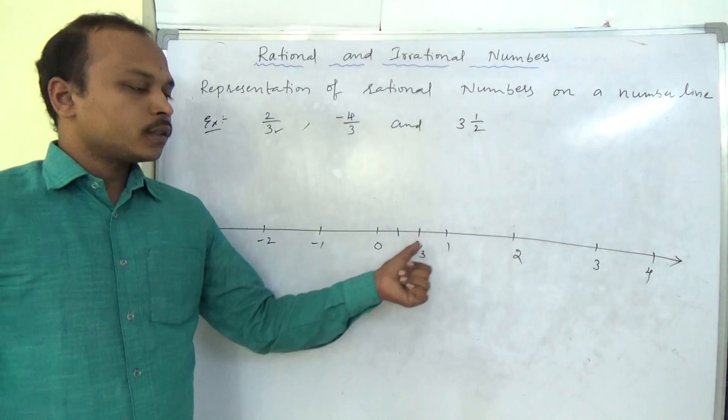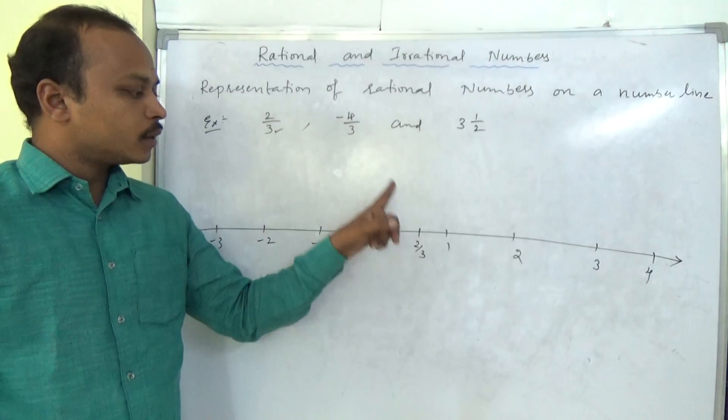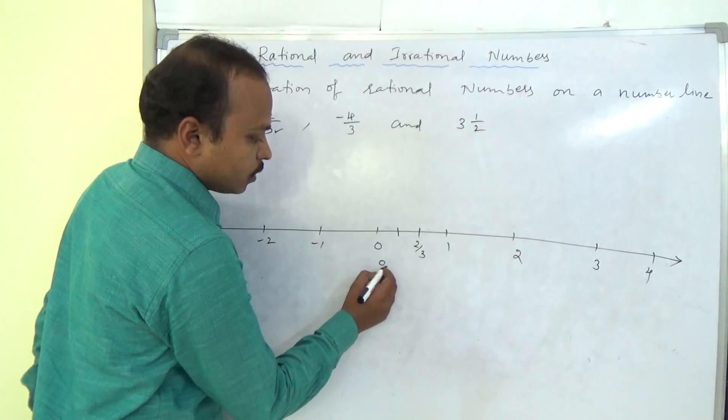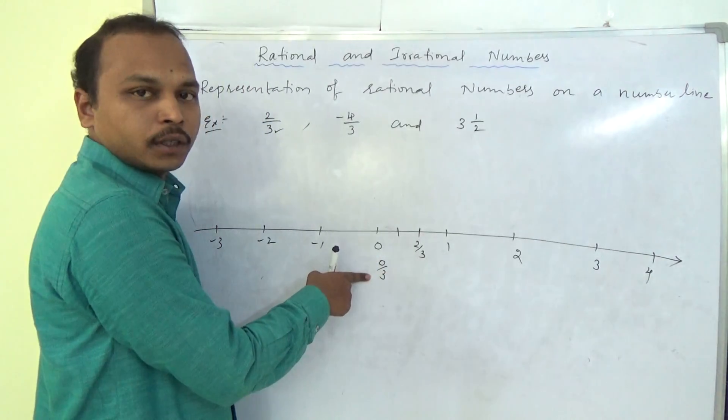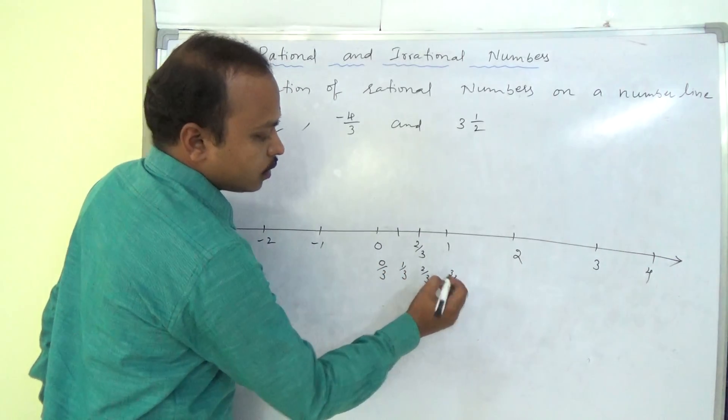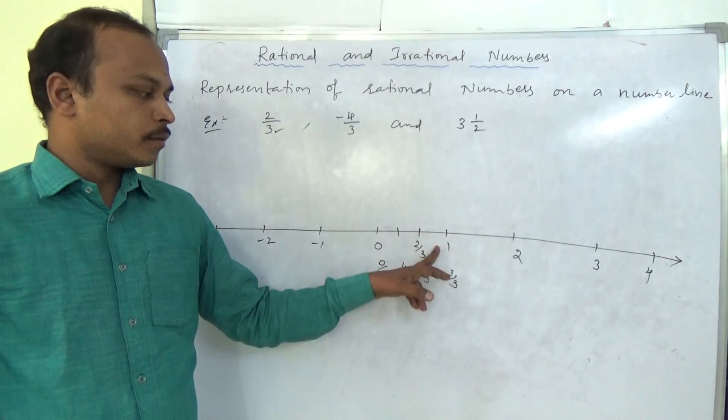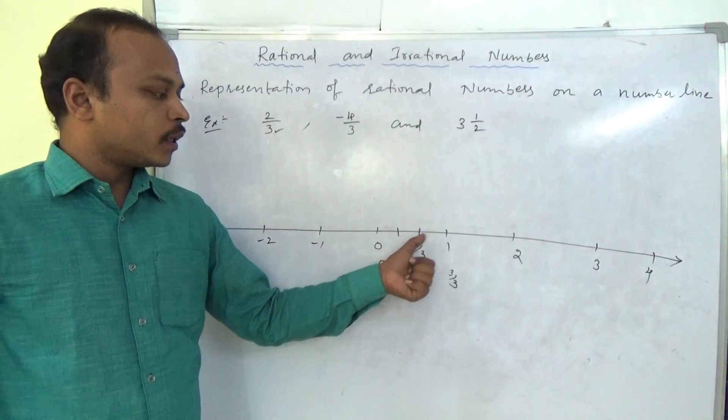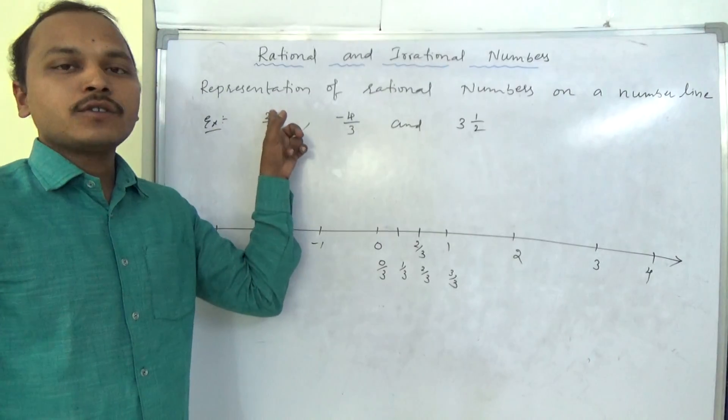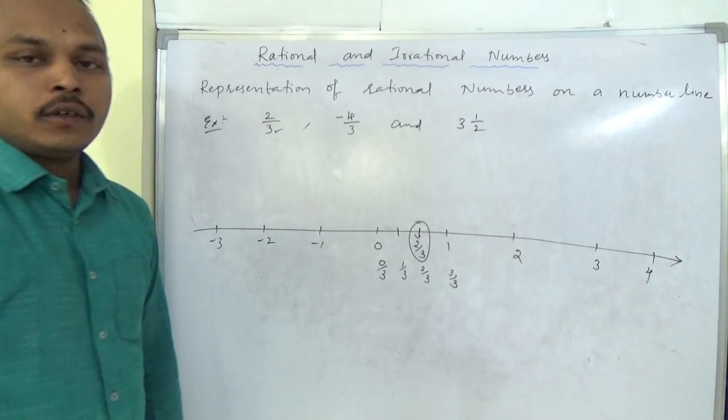According to denominator, should make 3 equal parts. Now, as the numerator says, that part is 1, 2. Actually, if you observe, this is 0 by 3. 0 by something is 0. Now, this is 1 by 3. This is 2 by 3. And this is 3 by 3. As you know, 3 by 3 is 1. According to denominator, we should make parts. And we have to represent, as numerator, the particular part. Now, this is the 2 by 3 value.